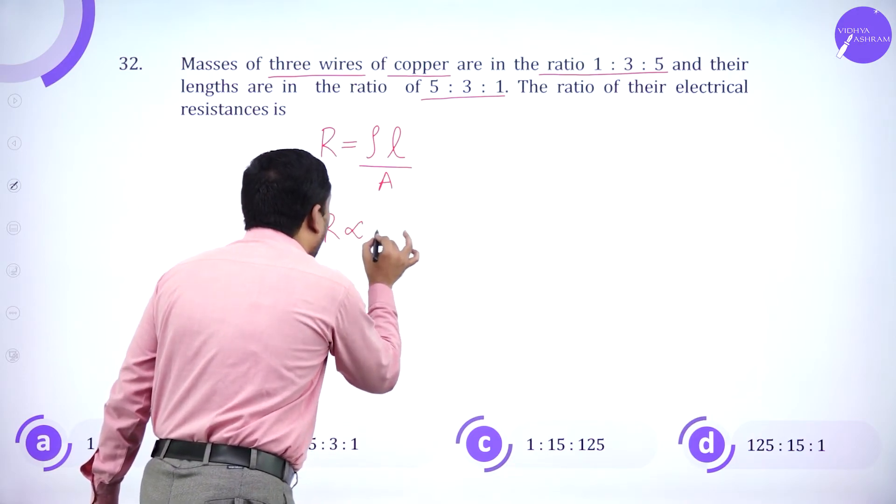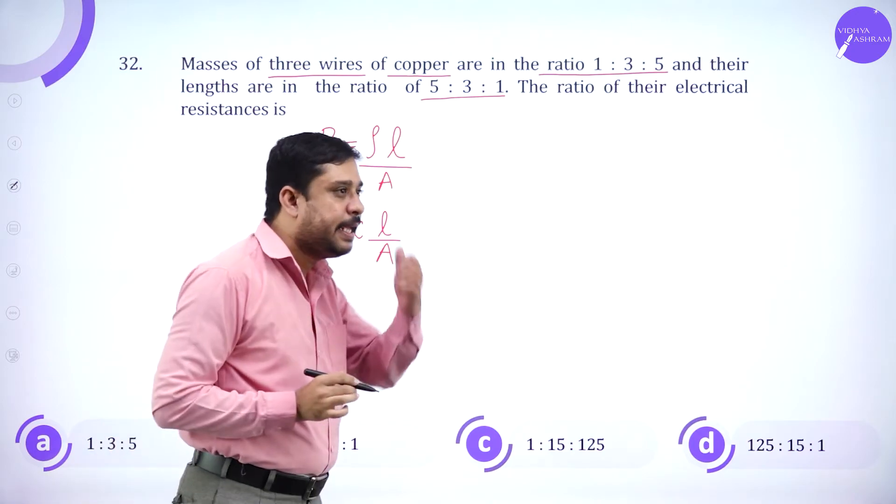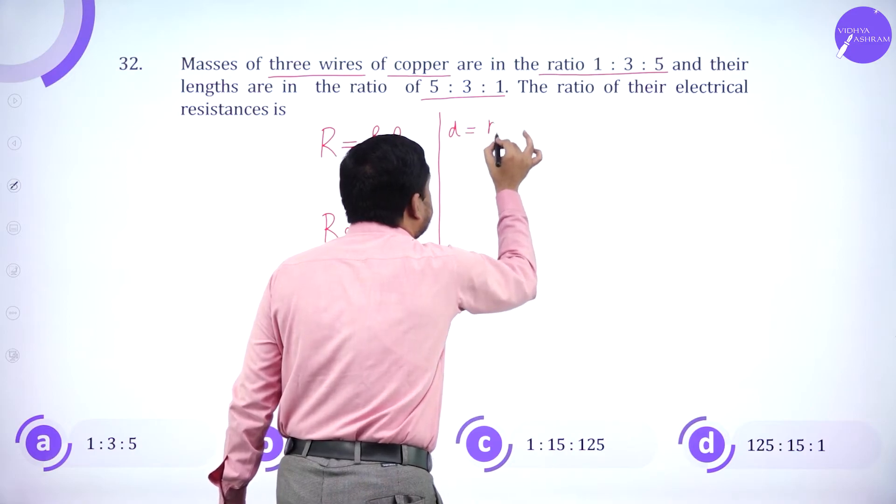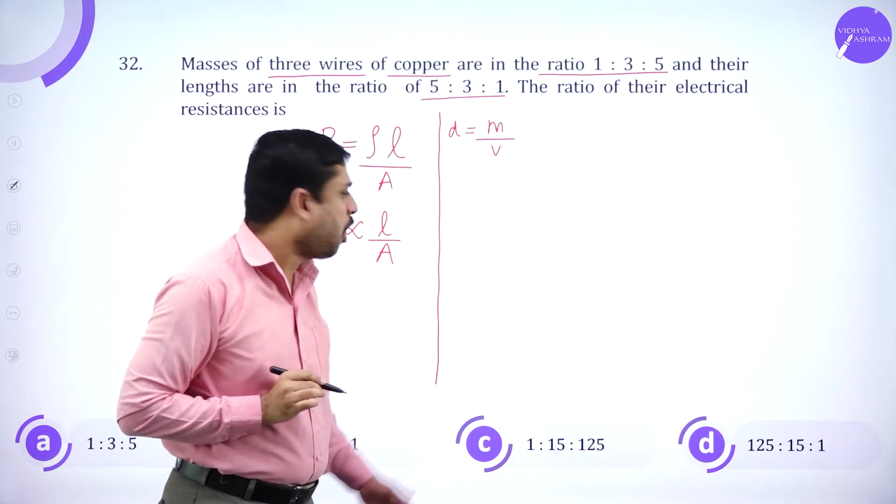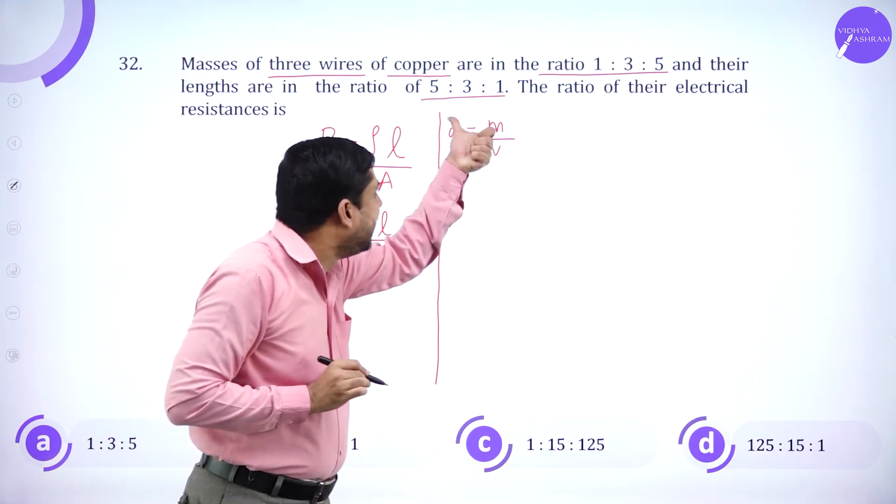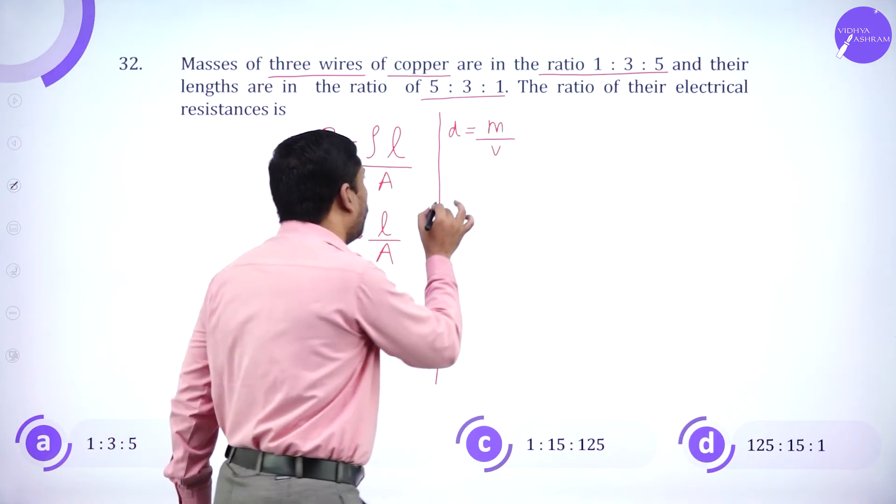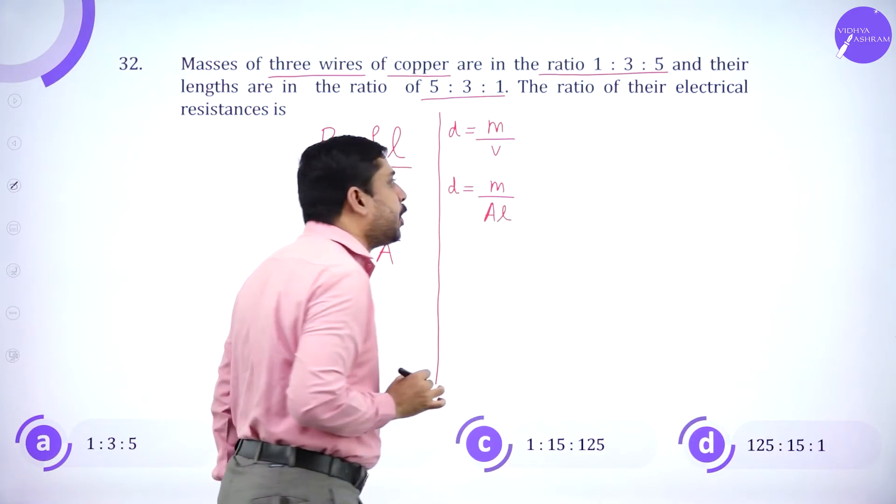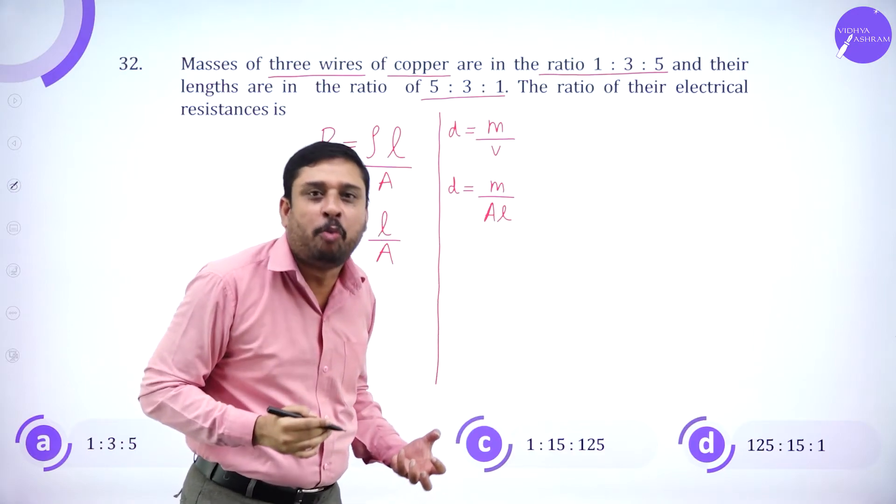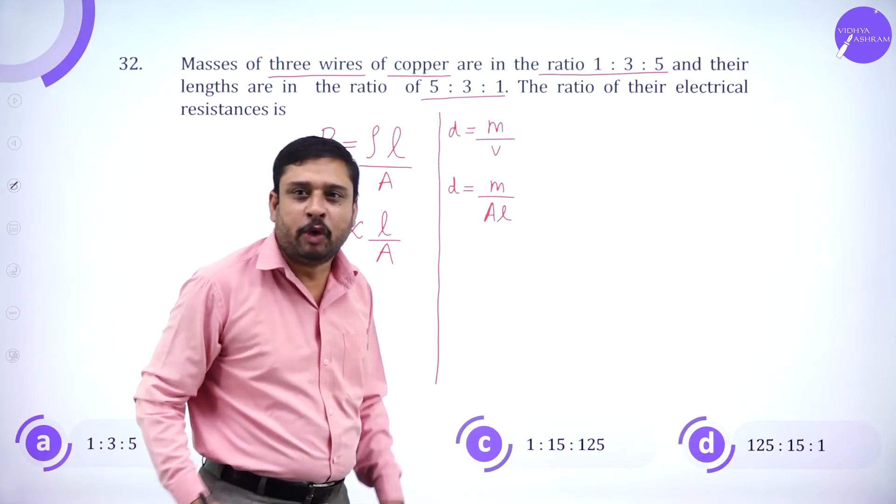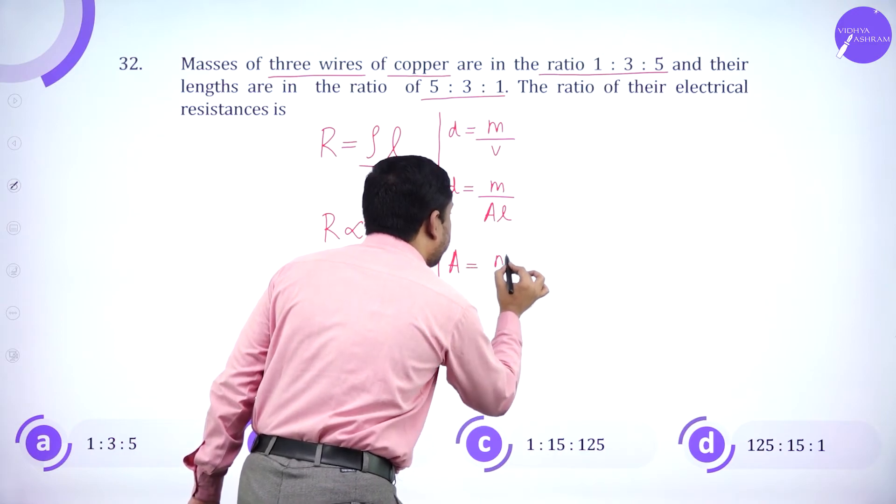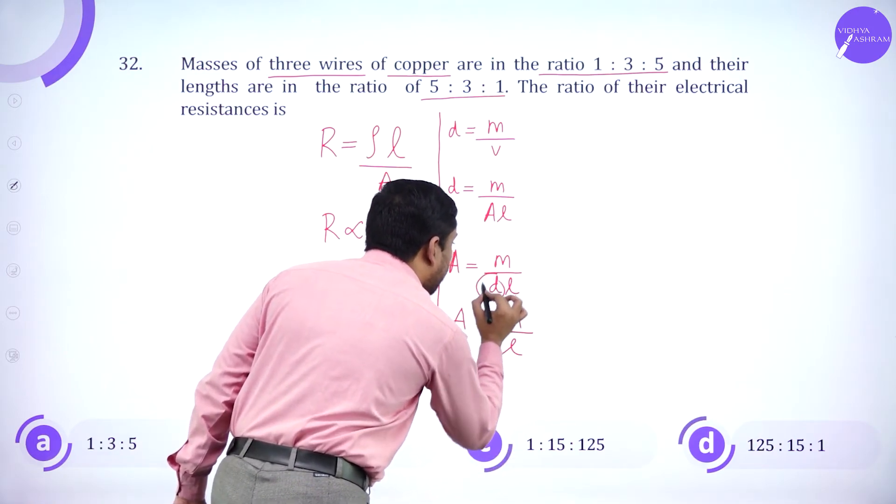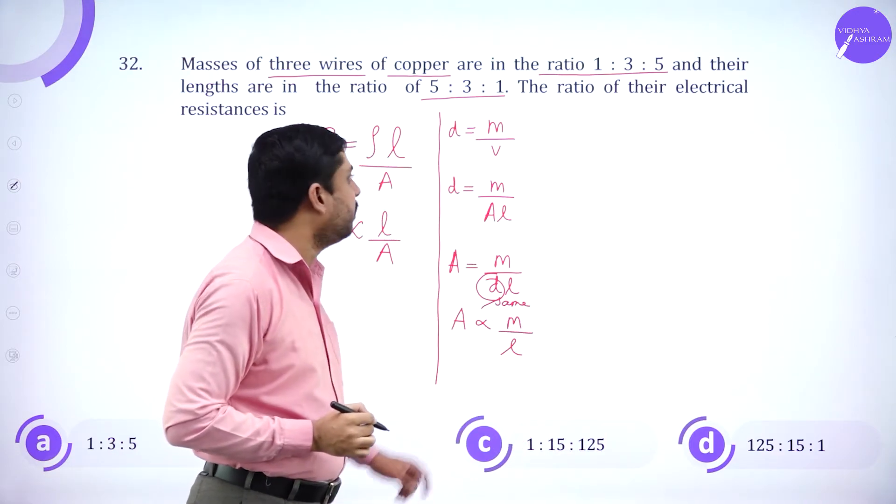Therefore, R is proportional to L divided by A, where A is the area. Now, we know density is mass by volume. Density is mass divided by volume, volume is A into L. So A is M divided by D times L. So area is proportional to M by L because density will be the same. Therefore, R is equal to L divided by A. So this becomes L square by M.